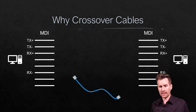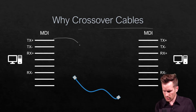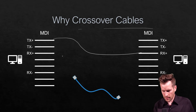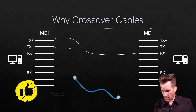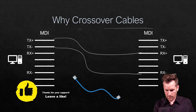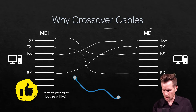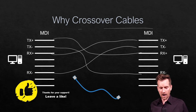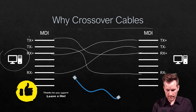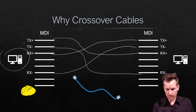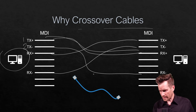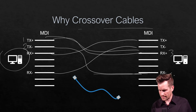A crossover cable takes pins 1 and 2 and brings them to pins 3 and 6, and pins 3 and 6 to pins 1 and 2. Now this computer that's talking on pins 1 and 2 is receiving on pins 3 and 6, and vice versa.